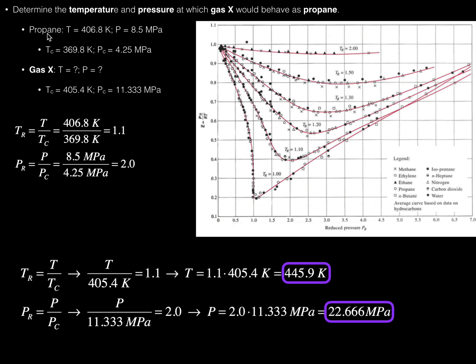Propane has a temperature of 406.8 Kelvin — I just took these numbers from the previous slide. The pressure is 8.5 megapascals. We would also need to know the critical variables: the critical temperature is 369.8 Kelvin and the critical pressure is 4.25 megapascals. These critical variables are something you could look up in a table — they may be in your physical chemistry textbook or your professor would provide them.